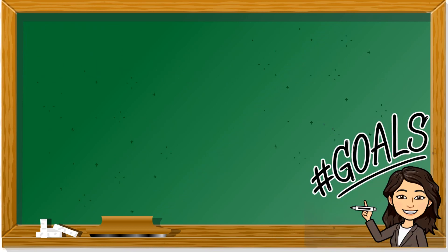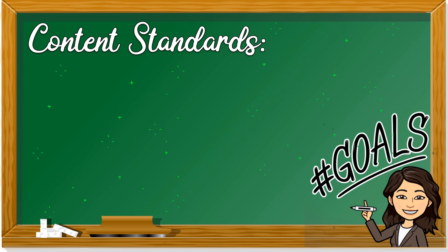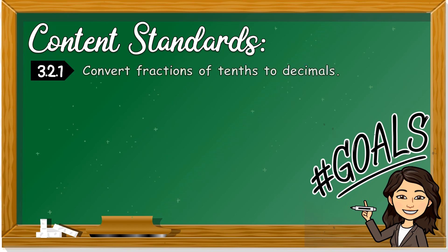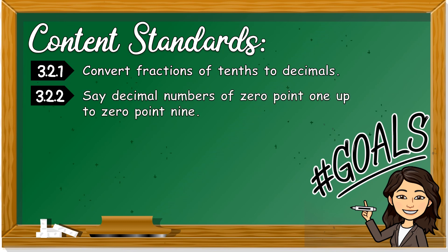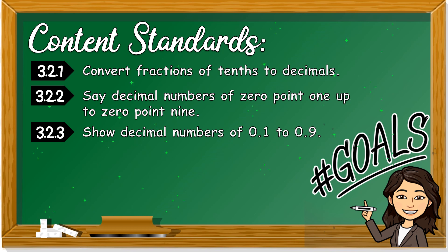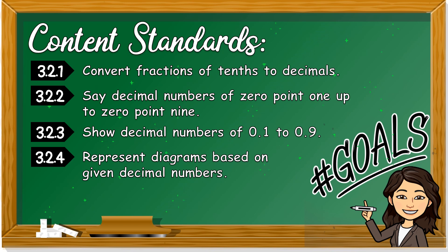Let's take a look at the content standards for today. We have several content standards: 3.2.1 convert fractions of tenth to decimals, 3.2.2 say decimal numbers of 0.1 up to 0.9, 3.2.3 show decimal numbers of 0.1 to 0.9, 3.2.4 represent diagrams based on given decimal numbers, and 3.2.5 write decimals as given.